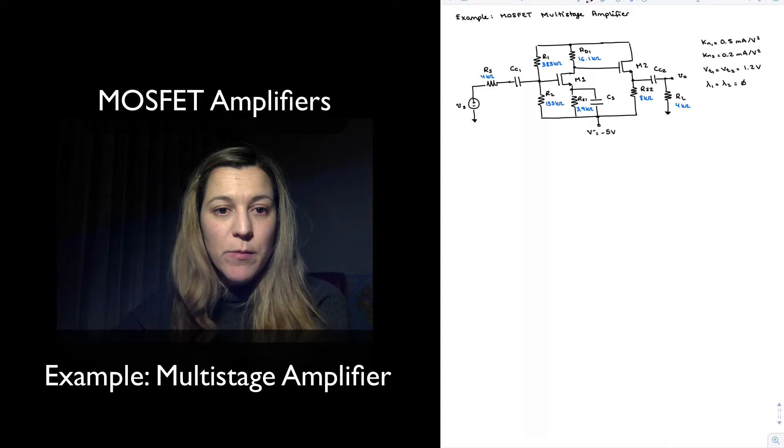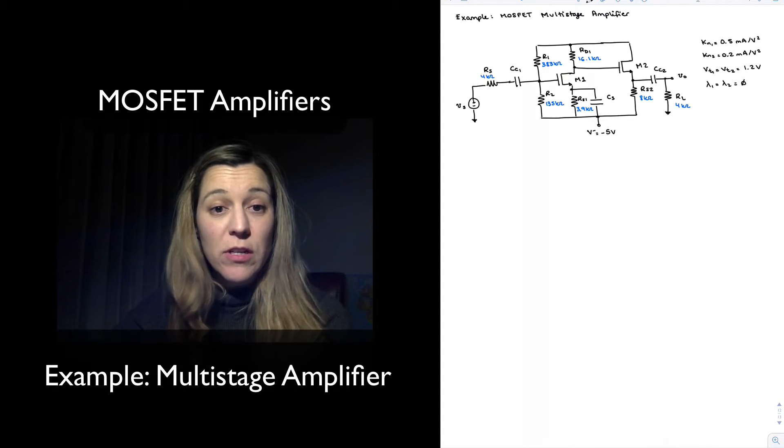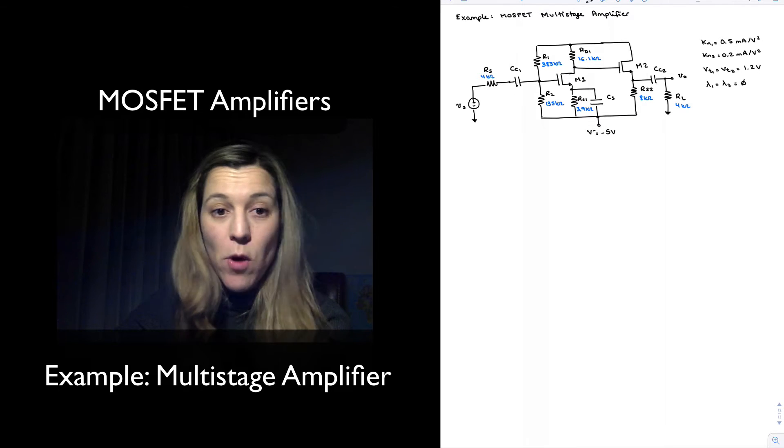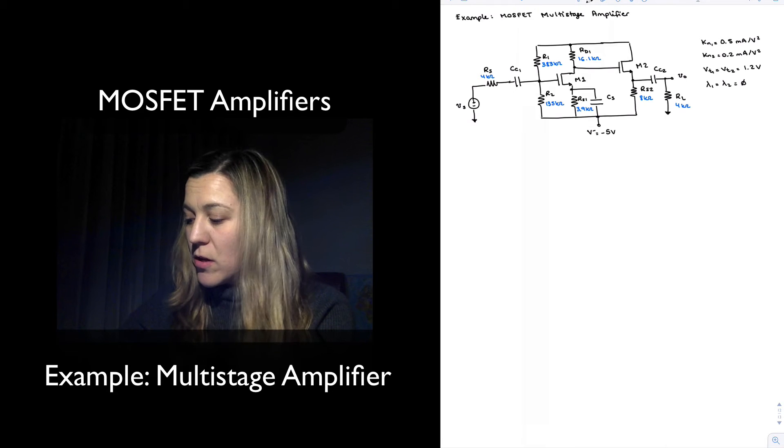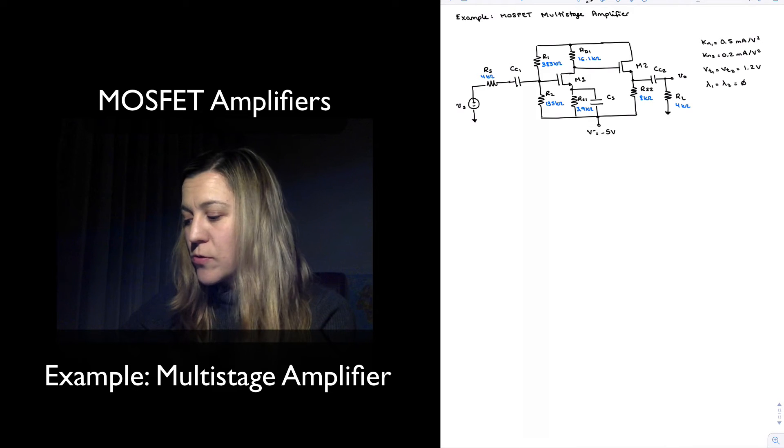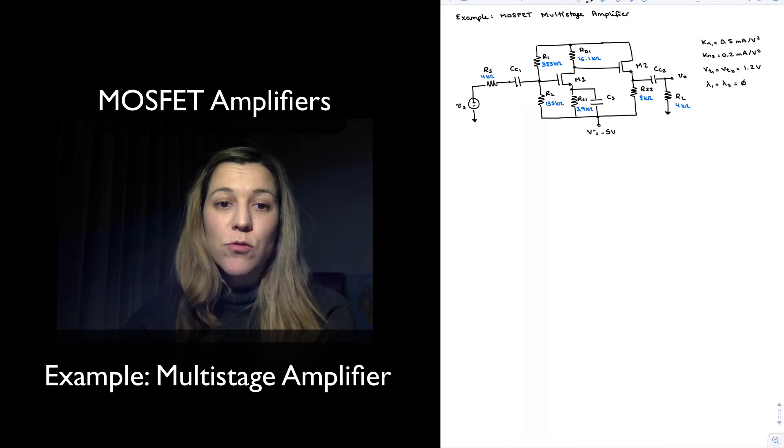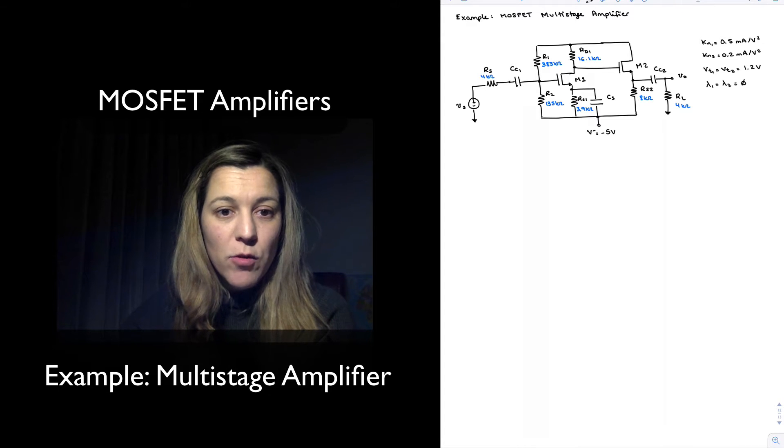KN1 equals 0.5 milliamps per volt squared, which is the MOSFET transconductance parameter of transistor M1. KN2 is 0.2 milliamps per volt squared. The threshold voltage for both transistors is equal to 1.2 volts. Lambda is equal to zero for both transistors, meaning we are neglecting channel length modulation effects.